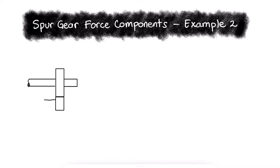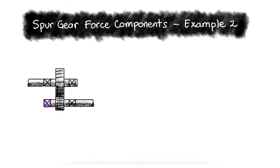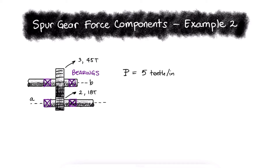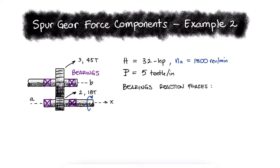A pair of shaft-mounted spur gears have a diametral pitch of 5 teeth per inch with an 18-tooth 20-degree pinion driving a 45-tooth gear. The power input is 32 horsepower at 1800 revolutions per minute, and we want to find the direction and magnitude of the forces acting on bearings A, B, C, and D.